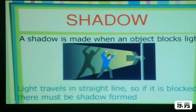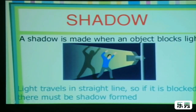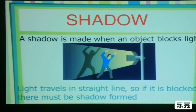A shadow is made when an object blocks light. Light travels in a straight line, so if it is blocked, a shadow is formed — just like the man in the picture. From our light source, the man is opaque, and it forms the shadow on the opposite side.